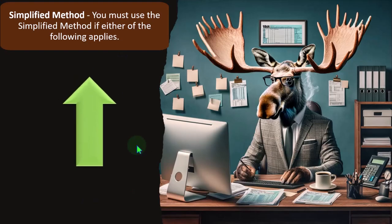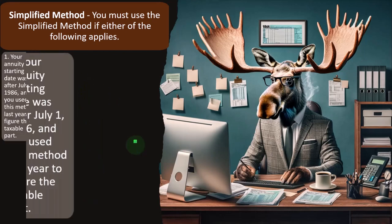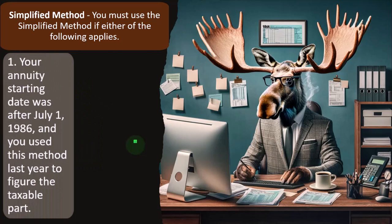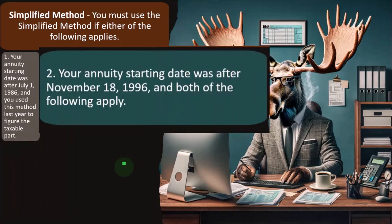Simplified method: You must use the simplified method if either of the following applies. Number one, your annuity starting date was after July 1st, 1986, and you used this method last year to figure the taxable part. So you have some consistency in the method that's going to be used, which is a general rule for basically accounting and taxation.